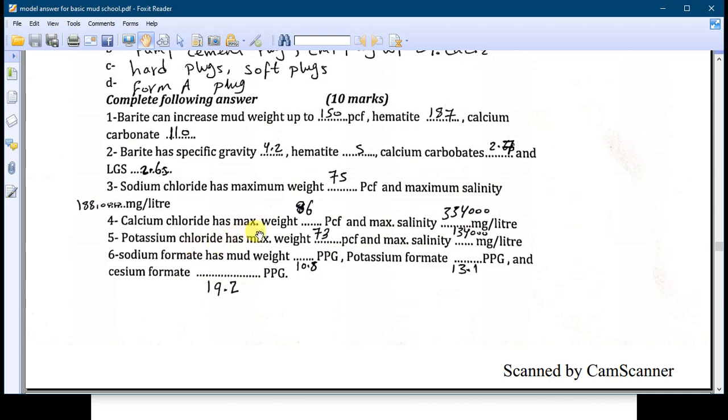Number five: the potassium chloride has the maximum weight of 73 PCF and the maximum salinity of 134 thousand. Number six, which is the last question: sodium formate has mud weight 10.8 PPG, potassium formate 13.1 PPG, and cesium formate is 19.2 PPG.